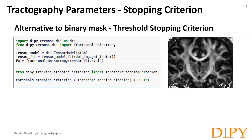If this is the case, the best strategy is to use the threshold stopping criteria. This will interpolate the map at the current tracking position and threshold it dynamically, resulting in a smoother boundary compared to thresholding the map beforehand, and overall improved tractography.